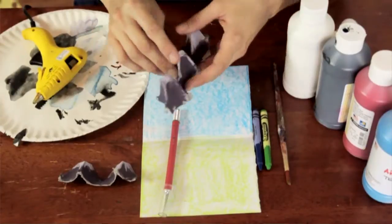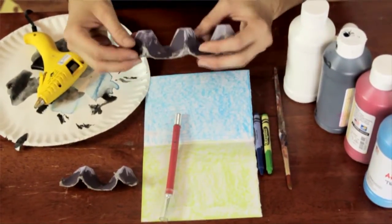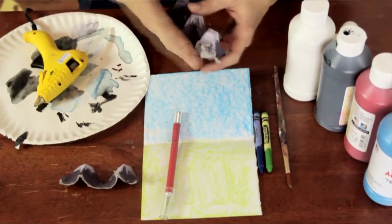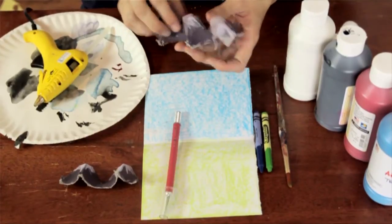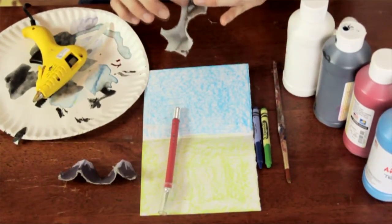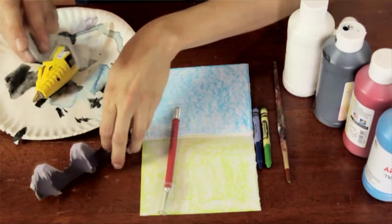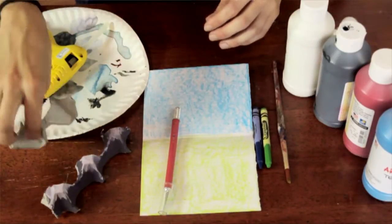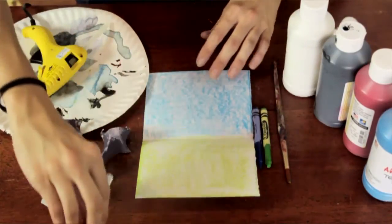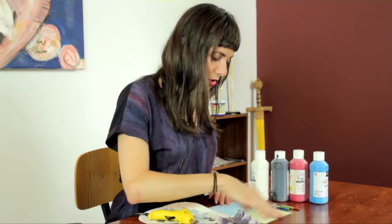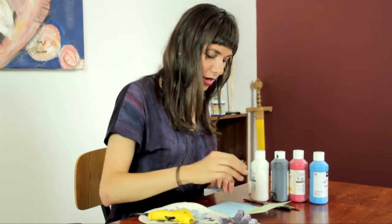As you can see, I've cut up this egg carton, just cut the peaks off the carton. It's one of those nice paper ones, which I think are nicer to paint on than the styrofoam ones. I've colored my paper here with blue and green crayon.